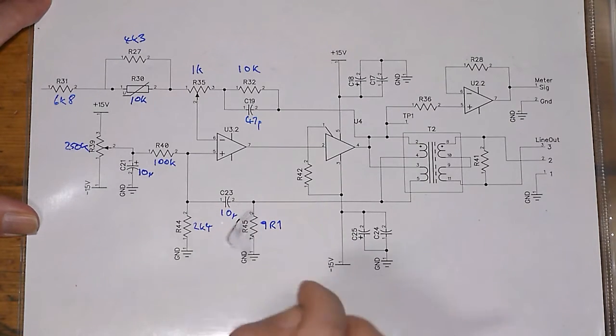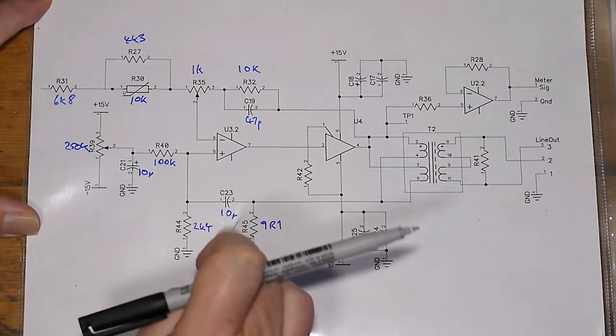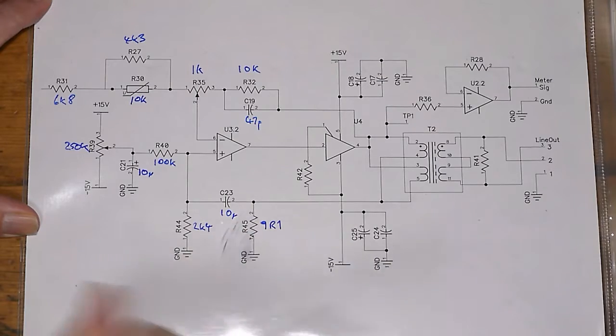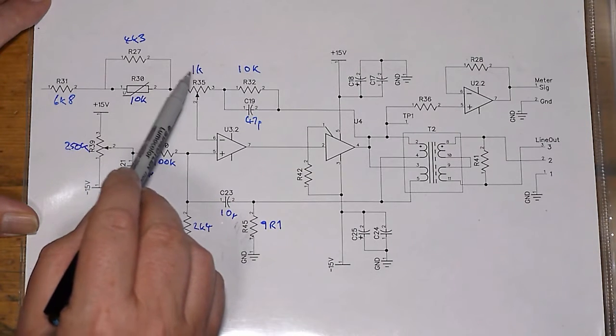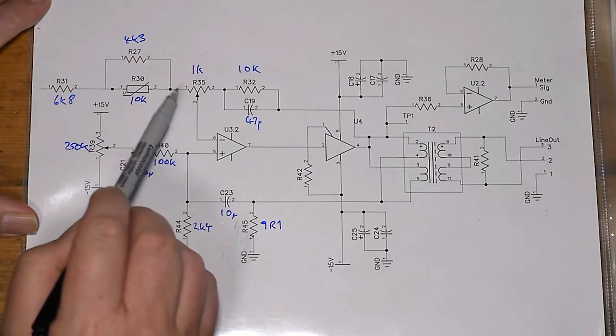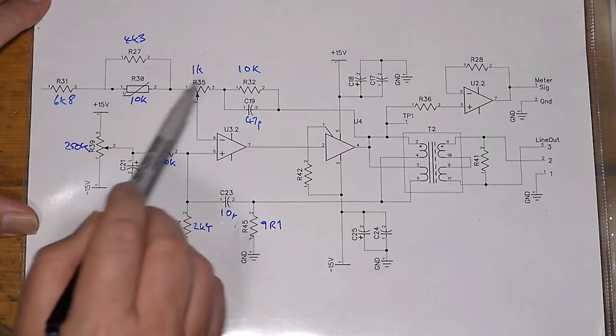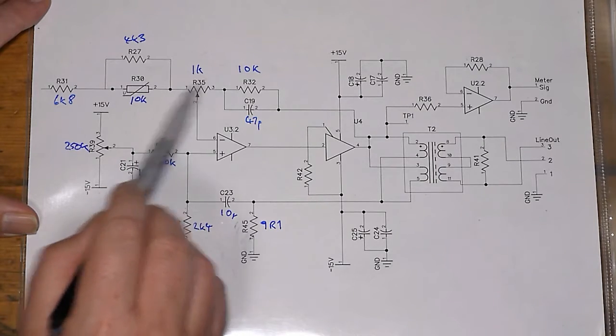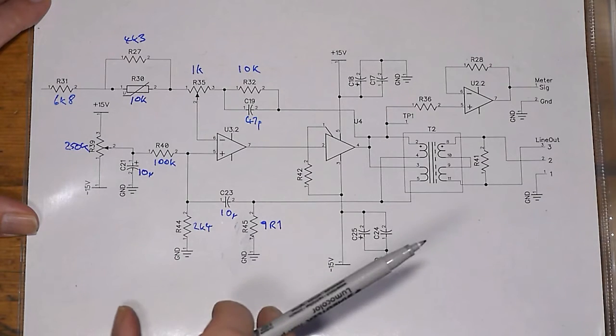So my thought is that what we need to do, I think all we might need to do is simply put a larger trim pod in for R35, because what I found was that if I adjusted it all the way up one end, then I seem to get pretty much the best possible results. So I think I just don't have enough range here.